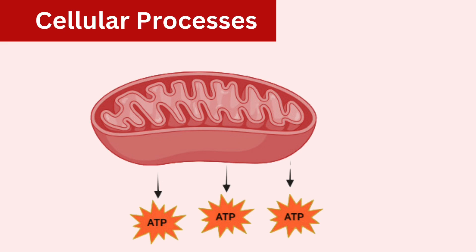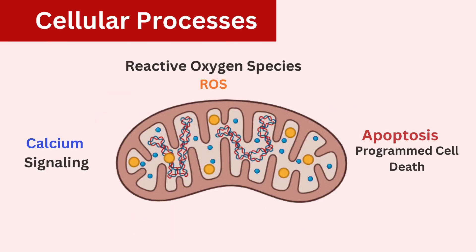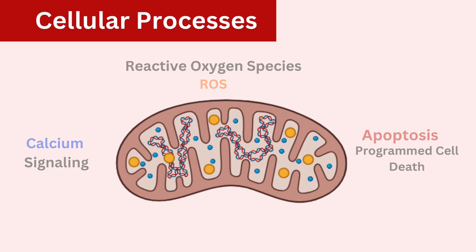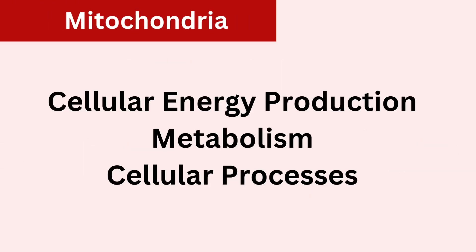Mitochondria play a role in regulating cellular processes beyond energy production. They are involved in calcium signaling, apoptosis which is programmed cell death, and the generation of reactive oxygen species or ROS, which can act as signaling molecules or cause cellular damage depending on their levels.